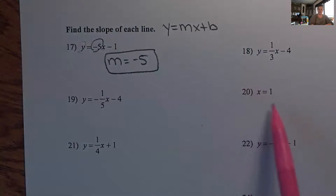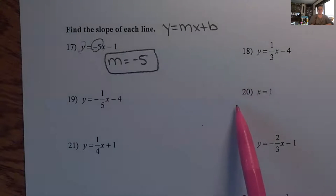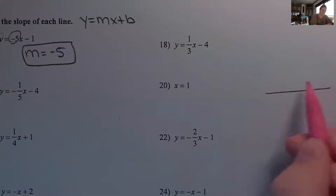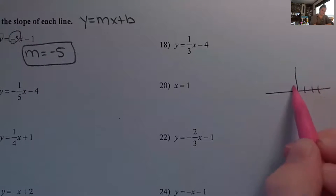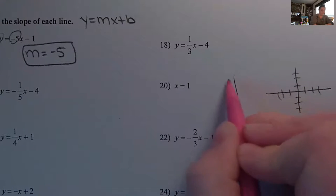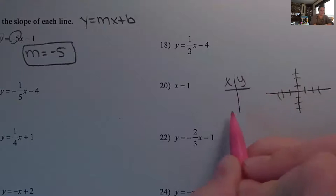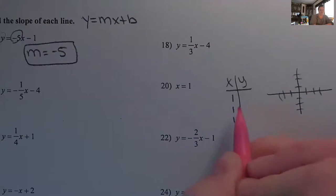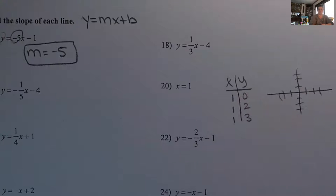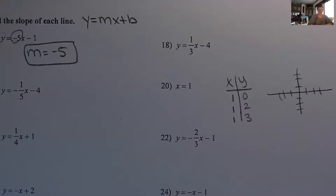Number 20 is a little tricky — you have x equals 1. I don't have Y by itself. If I had to graph x equals 1, it's saying that X is always 1, so I could have any number be my Y's. I could graph those points and see what kind of line and slope that is. My hint to you is that it's either going to be 0 or it's going to be undefined.